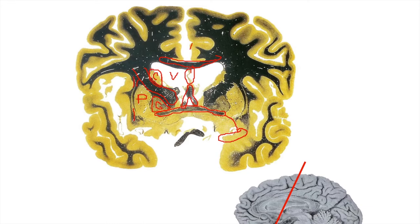We still see the cingulate cortex and cingulate sulcus. A new white matter tract appears dangling below the brain on the inferior side — white matter tracks coming together to form an X. That's the optic chiasm. These are the optic nerves heading to the orbit, starting to converge and form the optic chiasm right there.